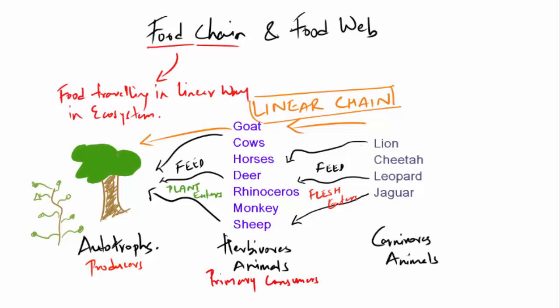The food energy is travelling from plants and trees to herbivorous animals and then to the carnivorous animals. In other words, the high level organisms feed upon a single type of low level organisms for food and energy. This is what is known as a food chain.